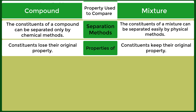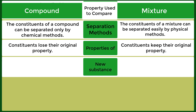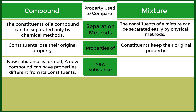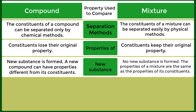Properties of compound: constituents lose their original property. Properties of mixture: constituents keep their original property. New substance — compound: a new substance is formed, and a new compound can have properties different from its constituents. New substance — mixture: no new substance is formed; the properties of a mixture are the same as the properties of its constituents.